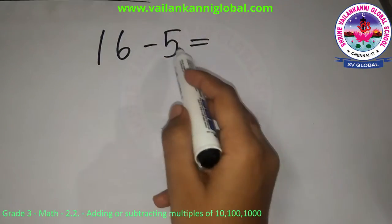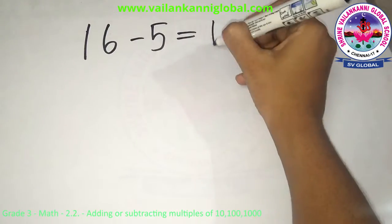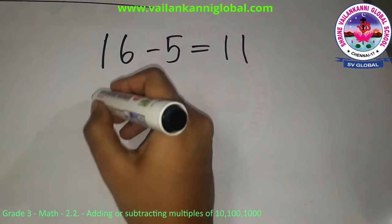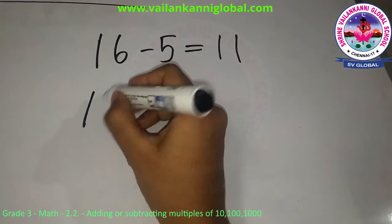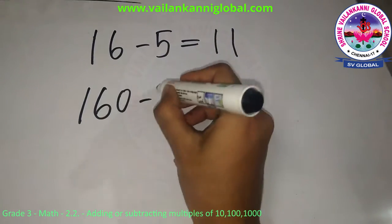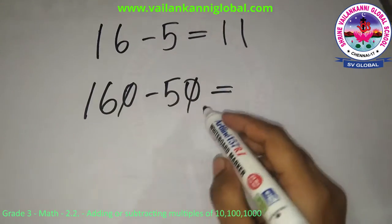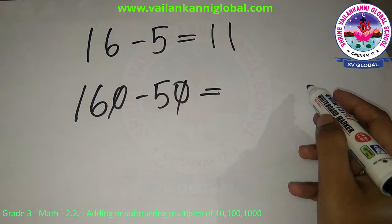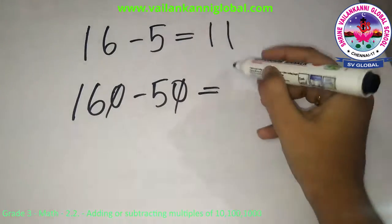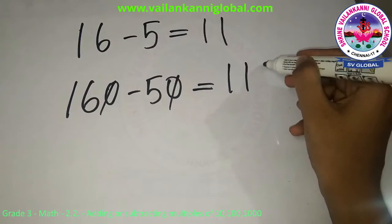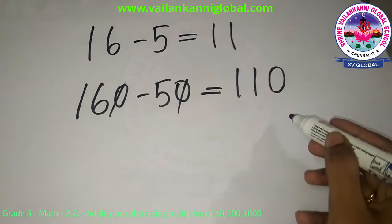So when you see 16 minus 5 is 11. Similarly, I am going to add zeros to both the numbers. So 160 minus 50. Just ignore the 0 and remember that you have to add the 0 towards the last. So 16 minus 5 is 11. Now add this 0 towards the last.